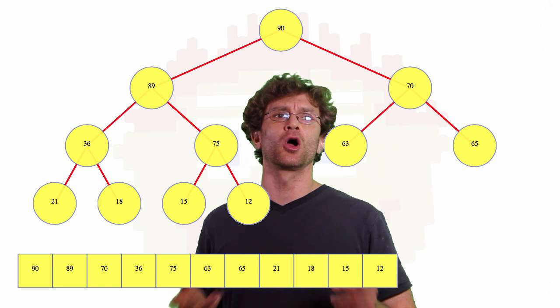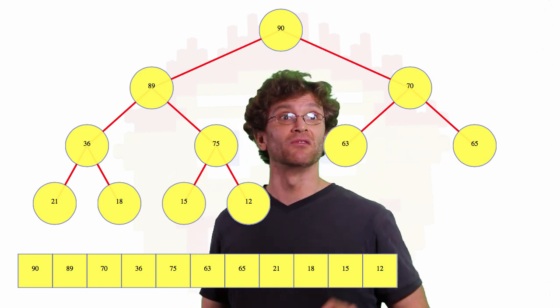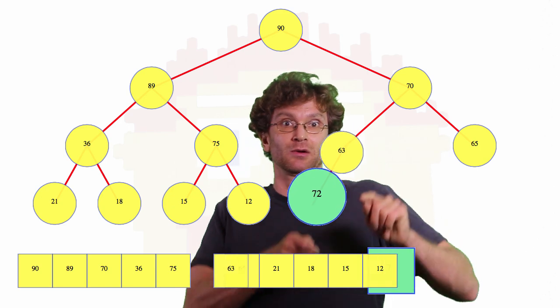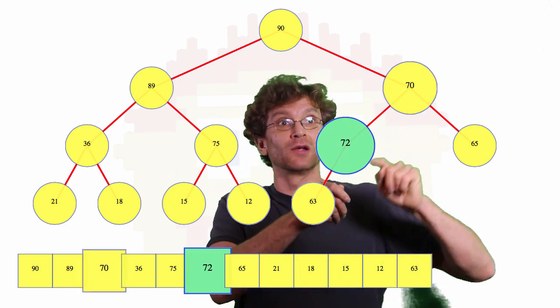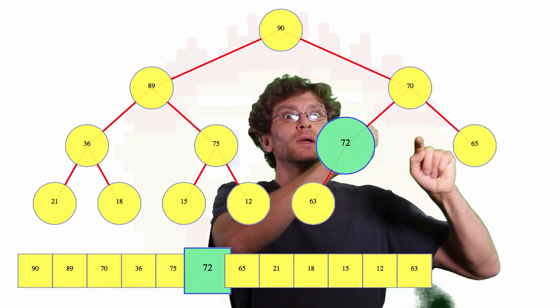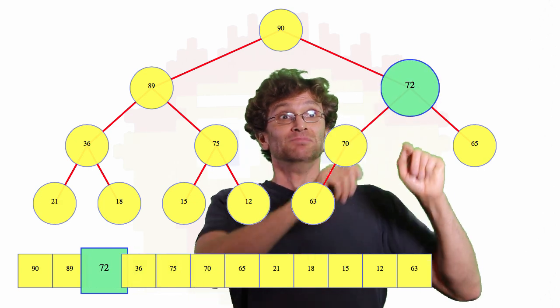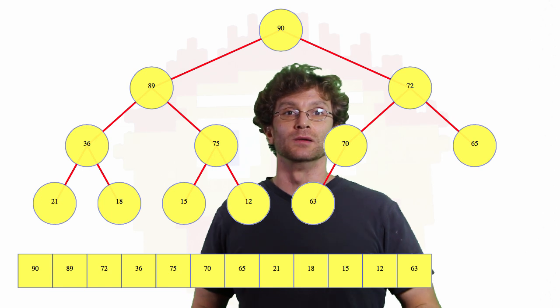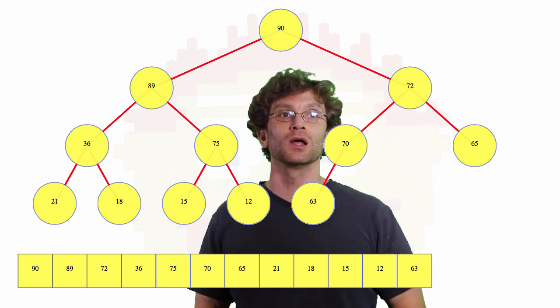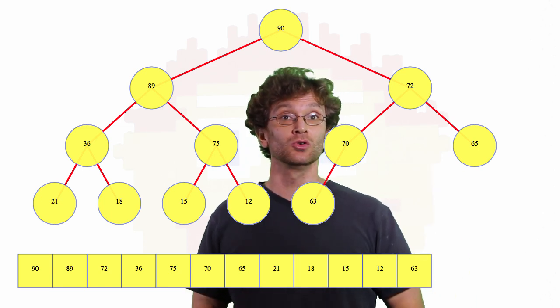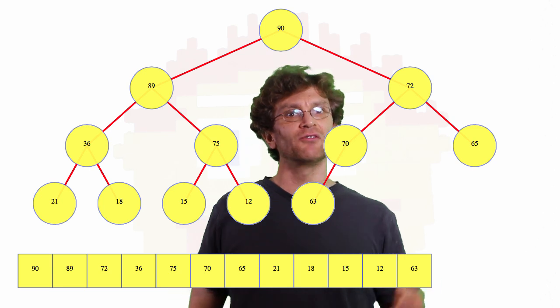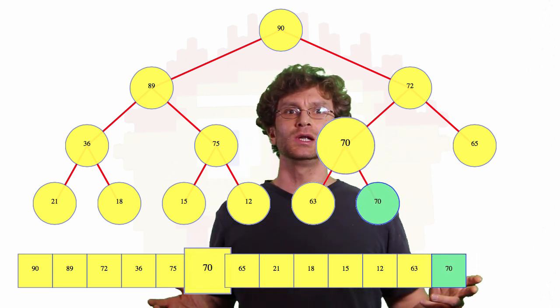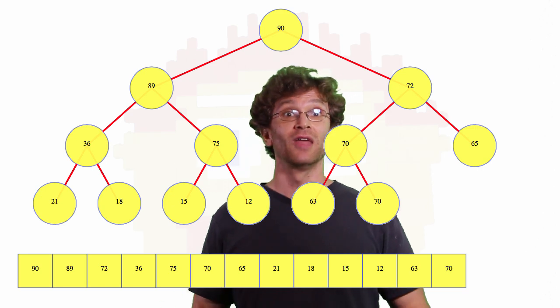What happens if we insert a larger value, like 72? Well, 72 compares to its parent. It's bigger than its parent, they swap. It compares to its new parent, 70. It's bigger than that, so they swap. It compares to the root, in this case 90. It's not bigger than 90. We're done. It just keeps on moving up until we're done. One other thing that we can do, let's say we insert a 70. Well, 70 ties with its parent. No need to continue. Done. That's insertion.